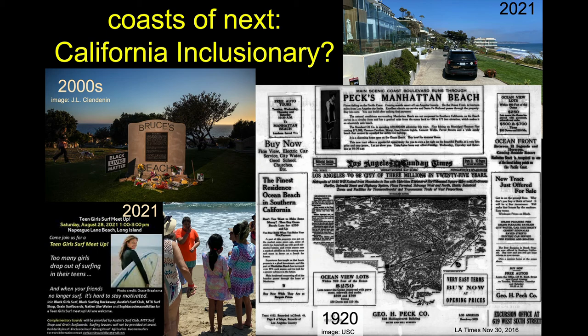They expanded from just a resort to actually selling bungalows — people could purchase units. It was a very successful business. The city of Manhattan Beach didn't like that and basically took it away through eminent domain and racist practices, using the excuse of needing it for a park — which was never used as intended.